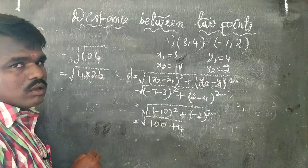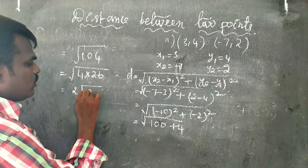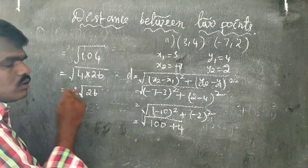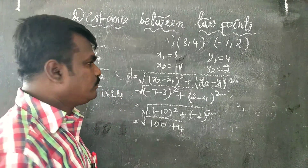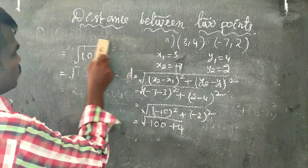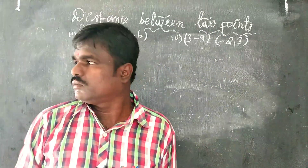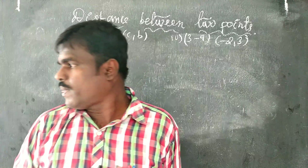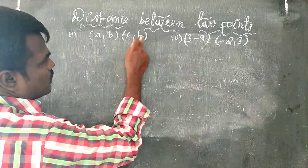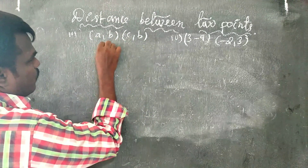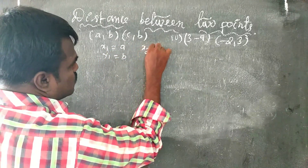So the answer for the second sum is 2√26 units.